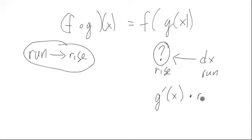And we multiply it by the run. This gives us the rise of g, the approximate rise of g.